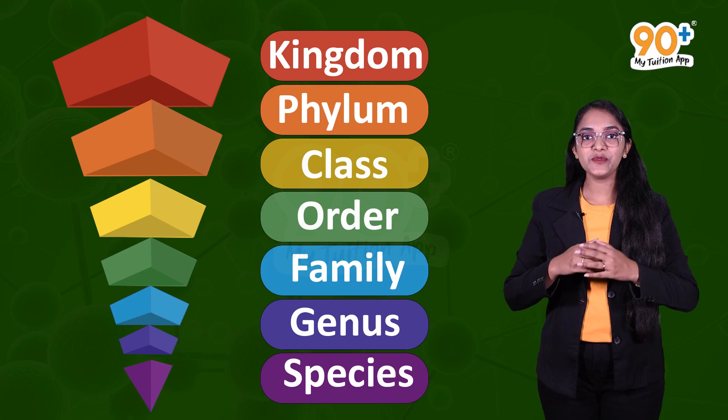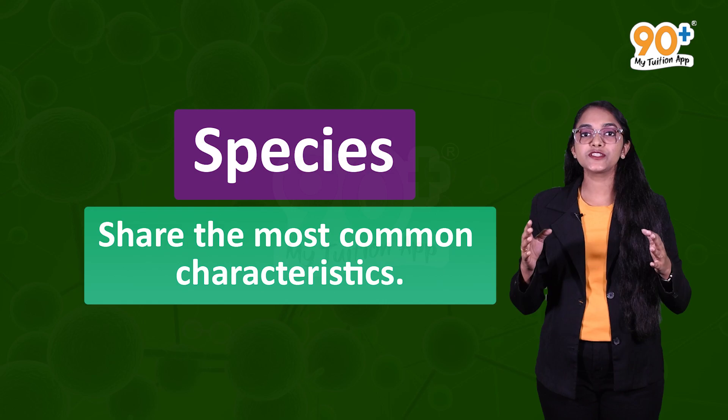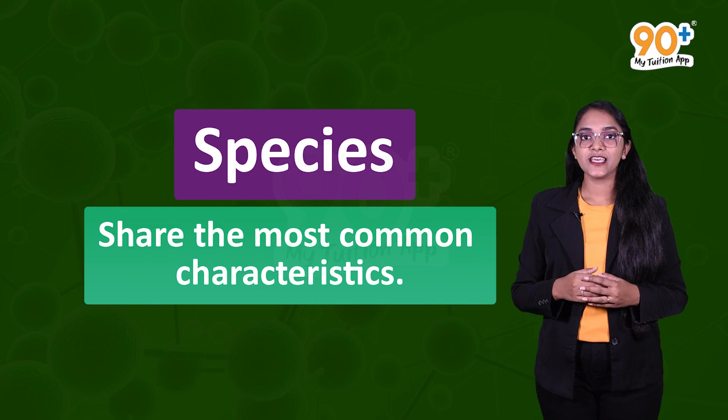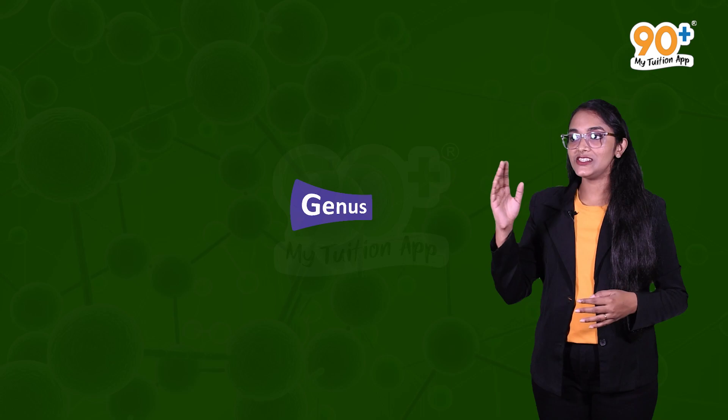Let's get some knowledge about each category. The lowest taxonomic category is species. Species shares the most common characteristics. Humans belong to one species and dogs belong to another — they share similar characteristics within their species.